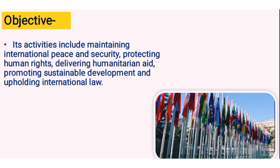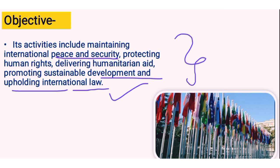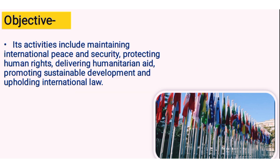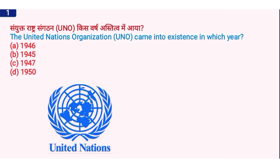What are the objectives of the United Nations? Its activities include maintaining international peace and security, protecting human rights, delivering humanitarian aid, promoting sustainable development, and upholding international law. These are the main tasks of the United Nations' work in the world. Now let's start with the agencies and all the important questions.